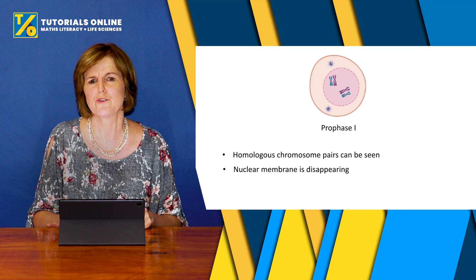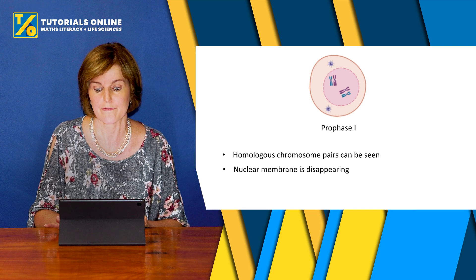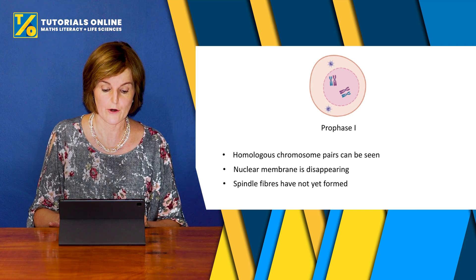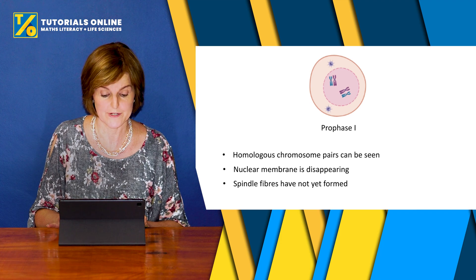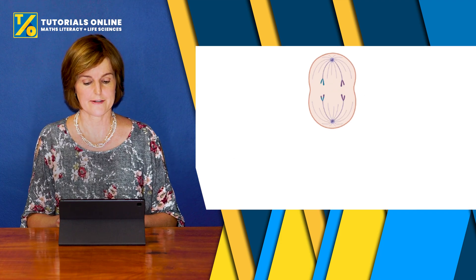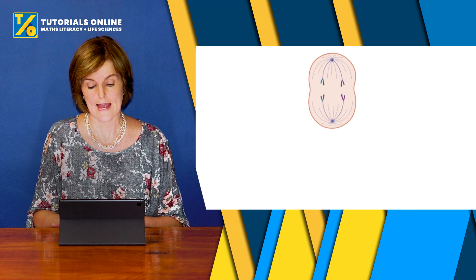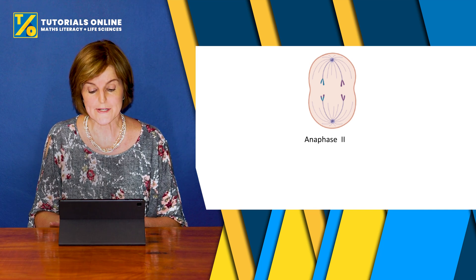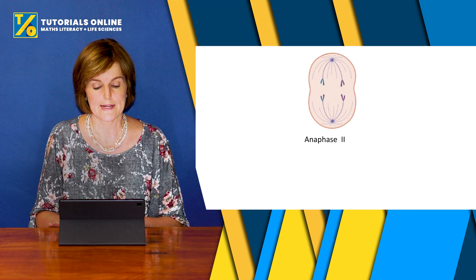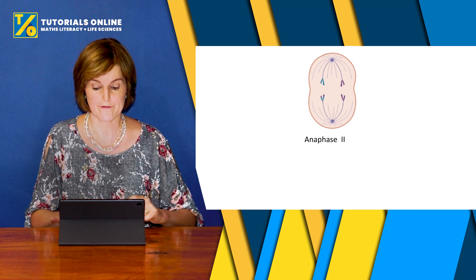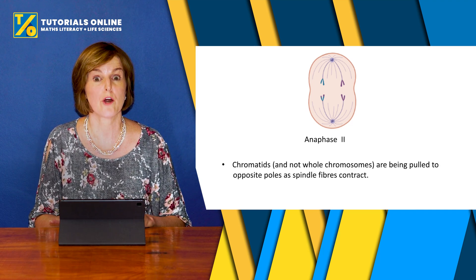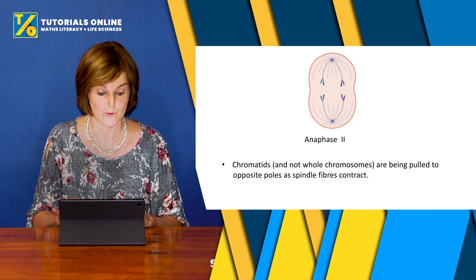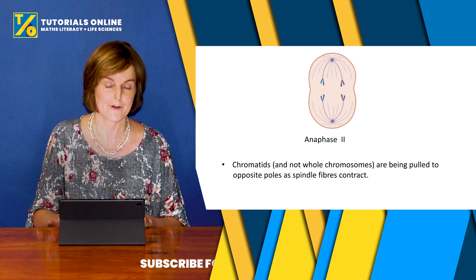These are the kinds of questions you could get in a test or exam quite often. Another slide shows that spindle fibers haven't formed yet. The last example is anaphase II — something is moving away from the equator: chromatids, not whole chromosomes, are being pulled to opposite poles as the spindle fibers contract.